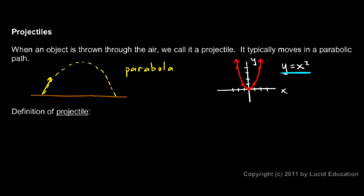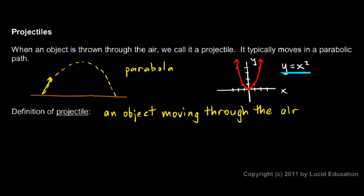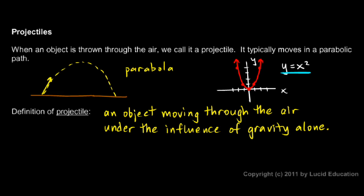Now let's define 'projectile.' A projectile is an object moving through the air under the influence of gravity alone. What this means is that there are no other forces other than gravity acting on the object. One thing we need to take from that: we're going to neglect air resistance. That's not realistic at high speeds, but if you just toss a tennis ball across the room to your friend, that's realistic — it's not moving fast enough for air resistance to be significant.